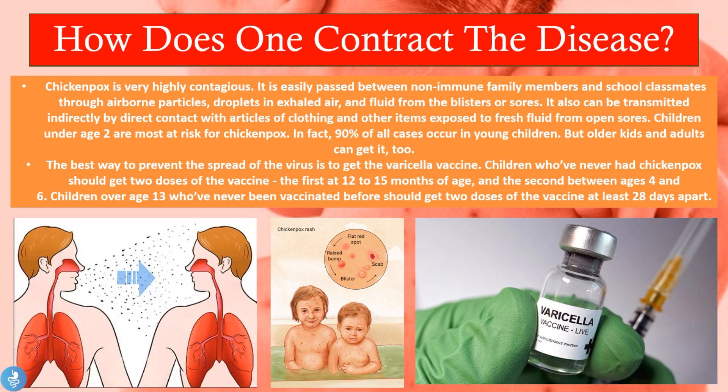The best way to prevent the spread of this virus is to get the varicella vaccine. Children who have never had chicken pox should get two doses of the vaccine — the first at 12 to 15 months of age and the second between ages four and six. Children over the age of 13 who have never been vaccinated should get two doses at least 28 days apart. That's why it's so essential to vaccinate our kids with the varicella vaccine so the onset of such diseases can actually be prevented.